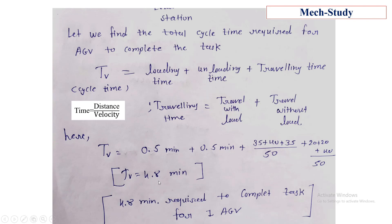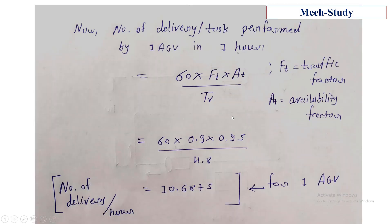By solving this, we get the total cycle time is 4.8 minutes. Hence, 4.8 minutes are required to complete a task by one AGV. The AGV completes one delivery in 4.8 minutes.